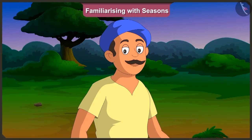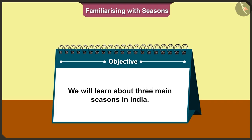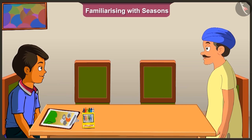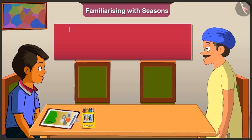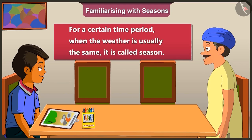Friends, today in this video, we will learn about the three main seasons in India. Chotu, there are three main seasons in India. For a certain time period, when the weather remains usually the same throughout, it is called a season.